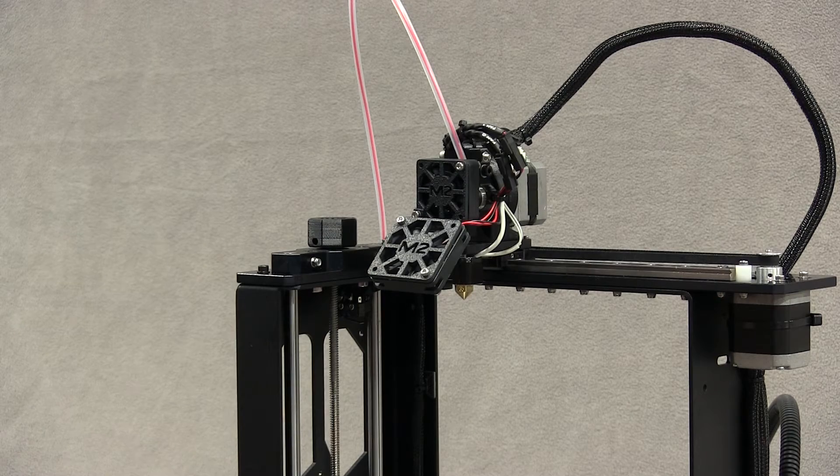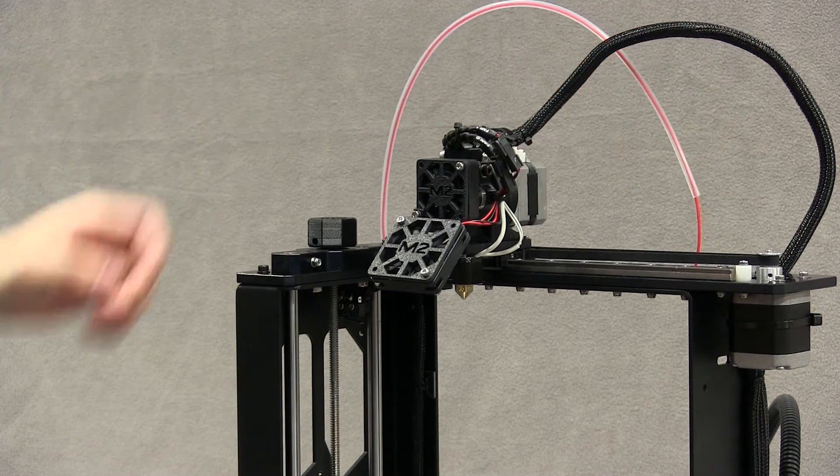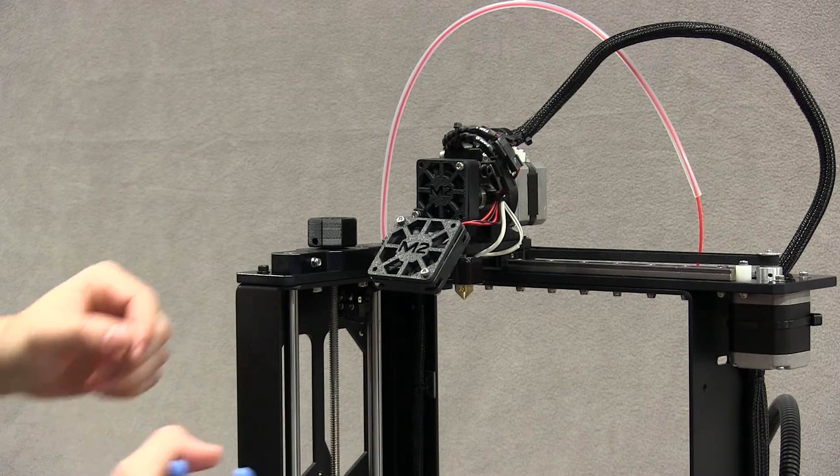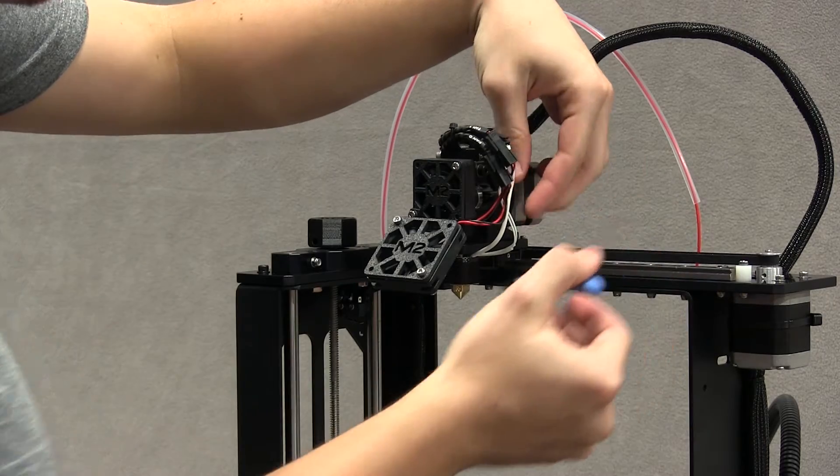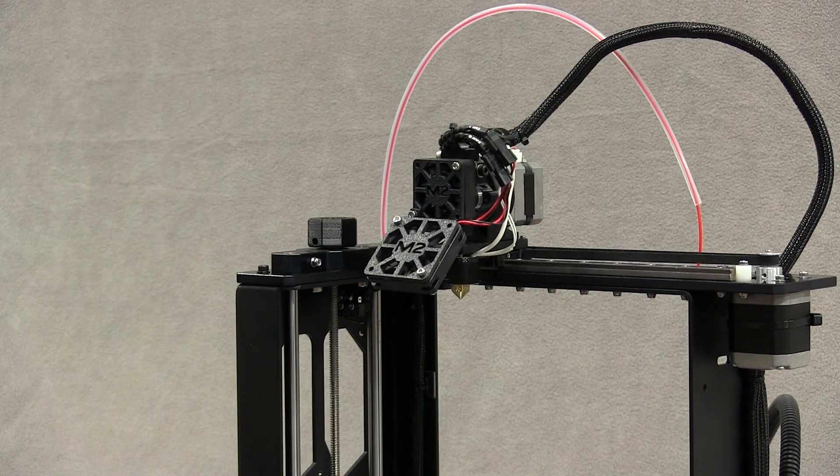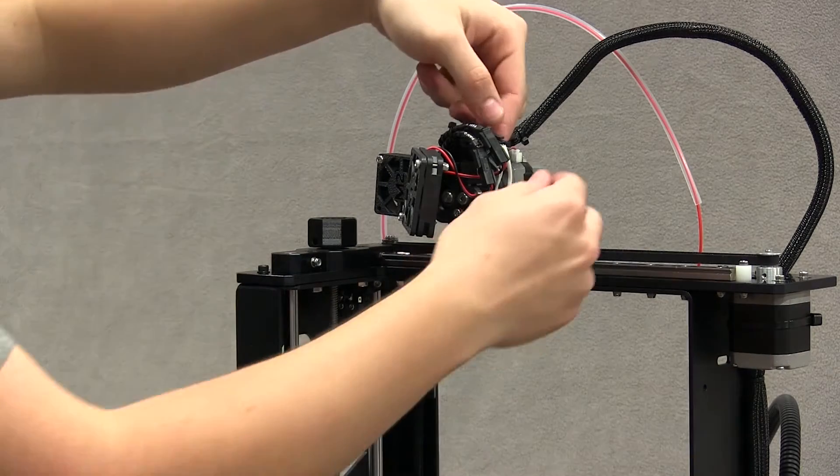Make sure you've already removed the filament. Clip the zip tie on the right-hand side of the filament drive. Rotate the fan assembly out of the way and disconnect the white wires leading to the V4 hotend.